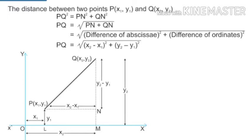Since triangle PQN is a right-angle triangle, we can apply the Pythagorean theorem to it. By using the Pythagorean theorem, we can find the value of PQ, because PQ is the hypotenuse. In triangle PQN, let us apply the Pythagorean theorem.